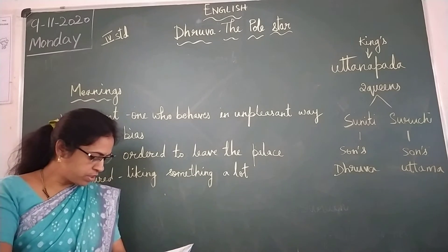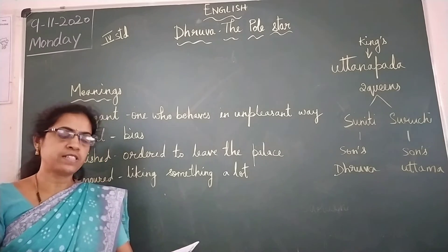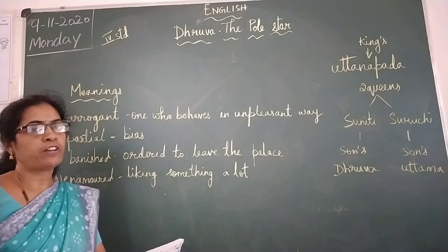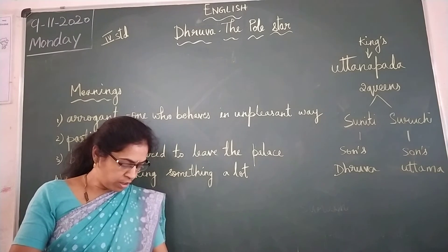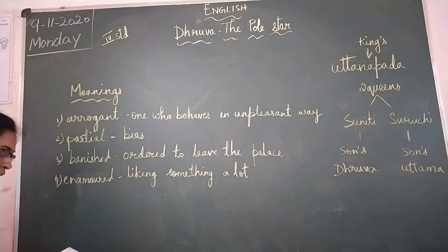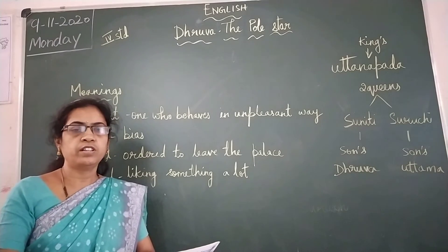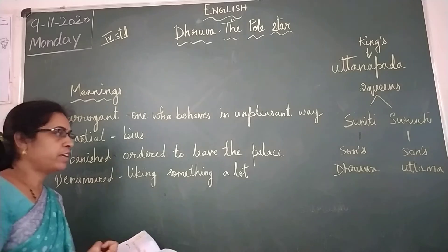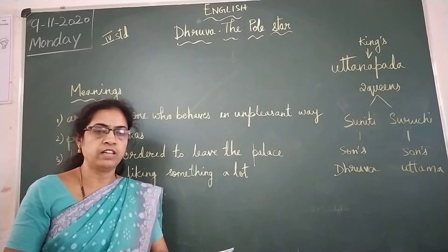Suniti lived on the outskirts of the city with her son, like a common person. The king was so enamored — enamored means liking something a lot — so enamored with Suruchi that he did not care to visit them. He did not care to see them; he did not care for his elder wife and son, and did not go to visit them even once.